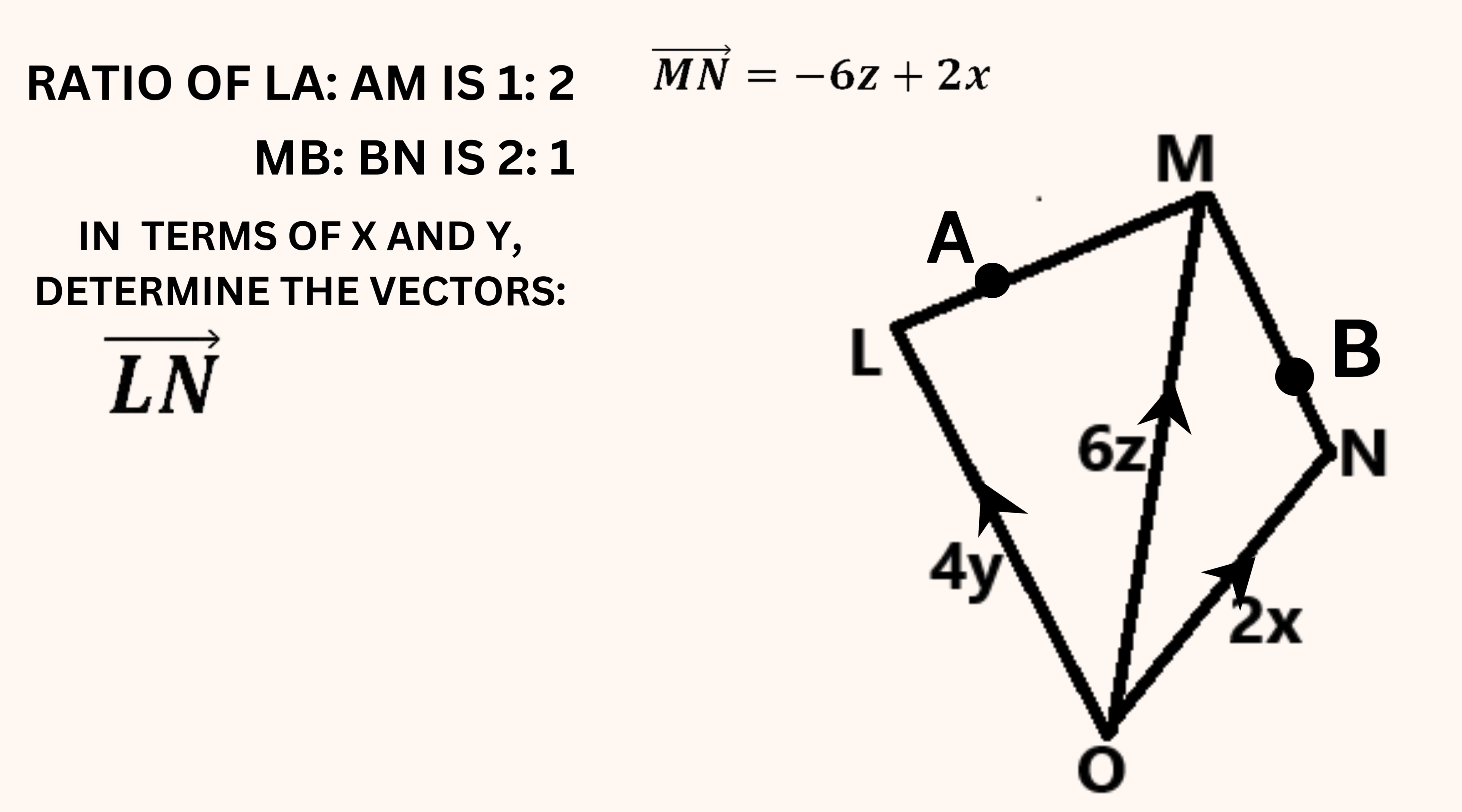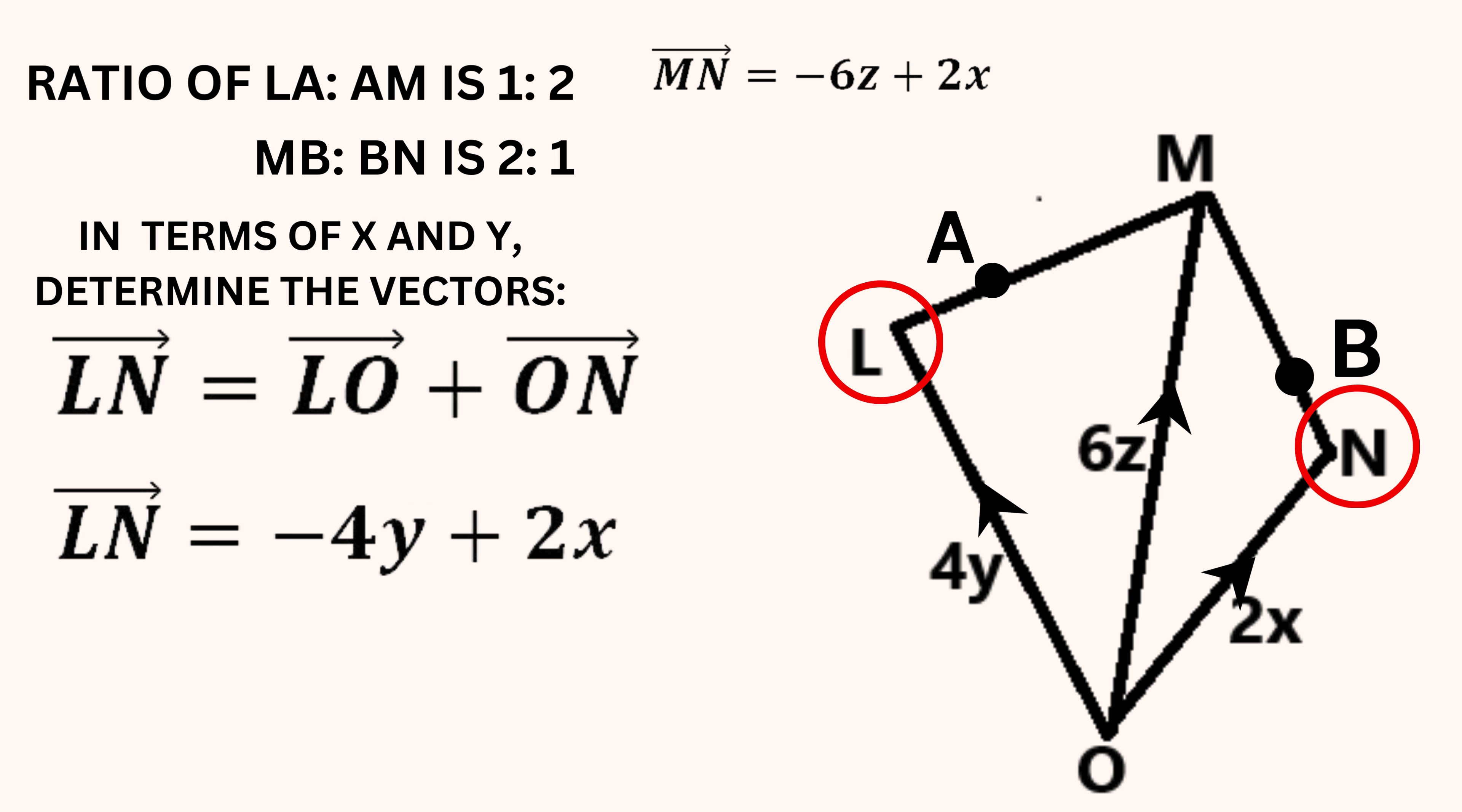The second vector we were asked to find was LN. How can we get from point L to point N? We can move from point L to point O and then from point O to point N. Hence we get the equation that's now showing on the screen. The vector LO is negative 4Y since its direction is opposite to OL. The vector ON is 2X. Therefore, our solution is vector LN is equal to negative 4Y plus 2X.